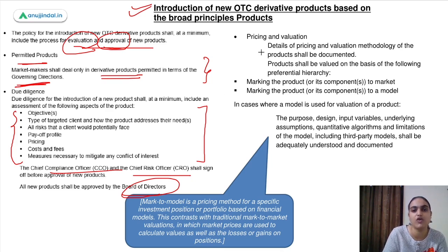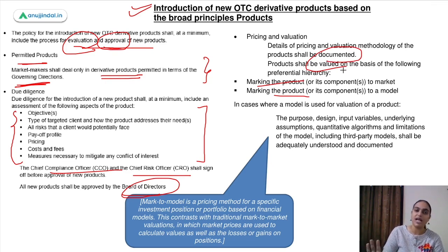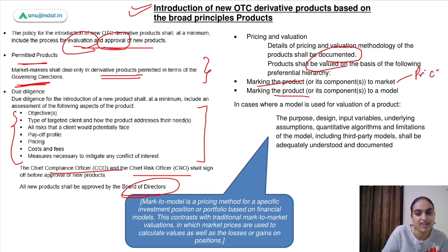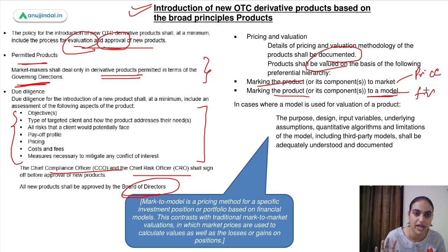For pricing and valuation, you can use either mark-to-market or mark-to-model valuation, and whichever method is used should be properly documented. In mark-to-model, pricing is based on a financial model; in mark-to-market, market prices are used to calculate values. When using a financial model, you need to specify the model's purpose, assumptions, input variables, and algorithms.